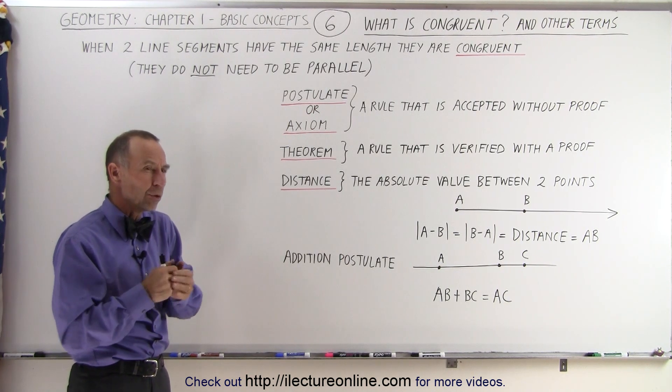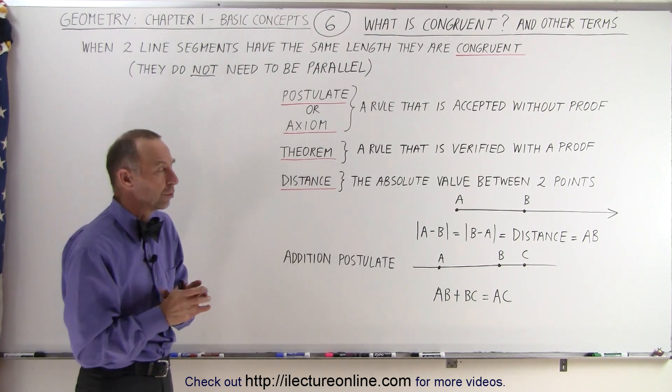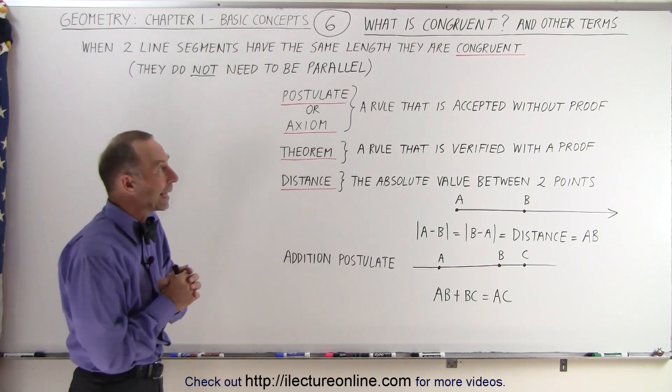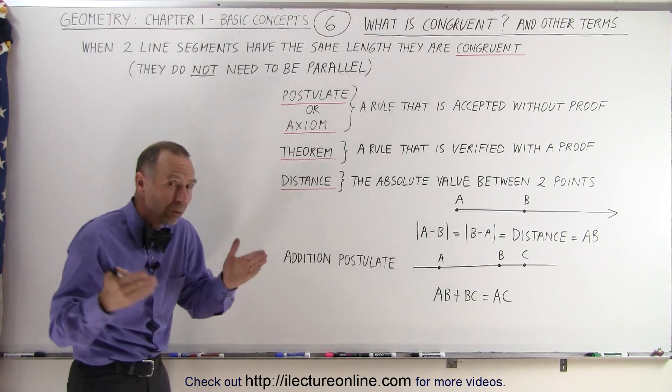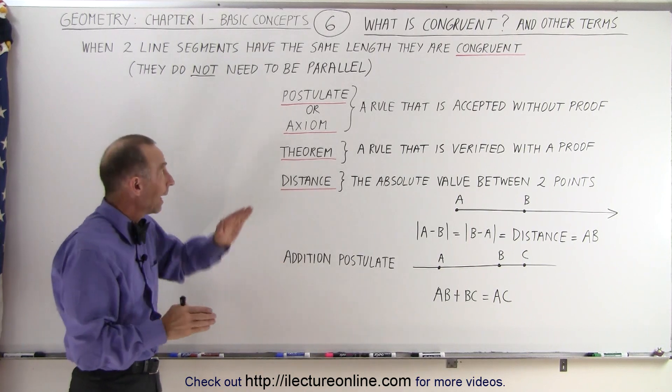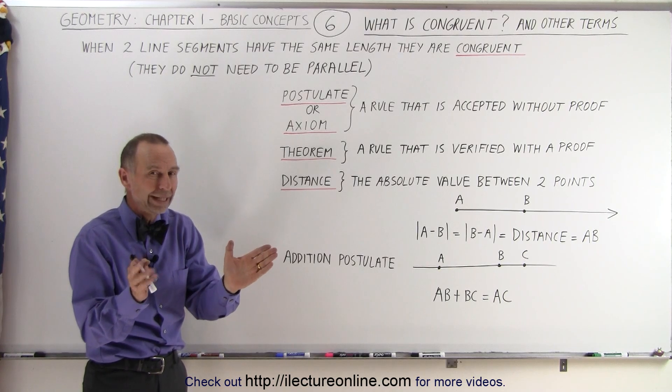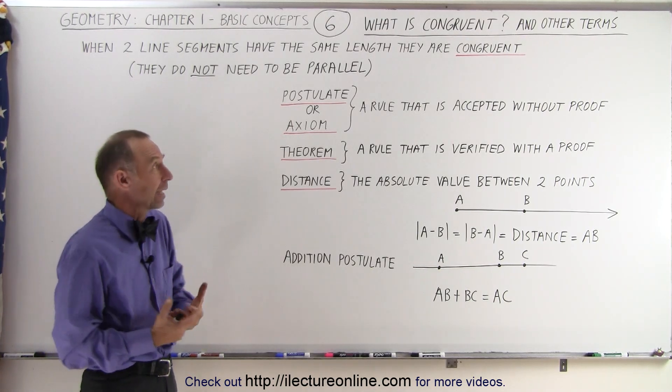I think we've also heard that when we use it with triangles, when two triangles are congruent. So that means when the ratios of the sides are the same, but we'll see that later. But here simply when we're dealing with line segments, if the two line segments have the same length and the line segments do not need to be parallel to one another, then those two line segments are congruent. That means they have the same length.